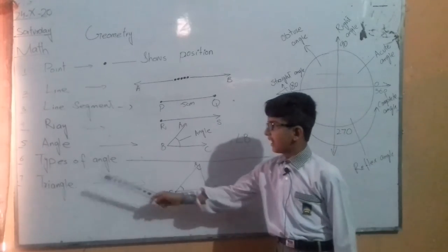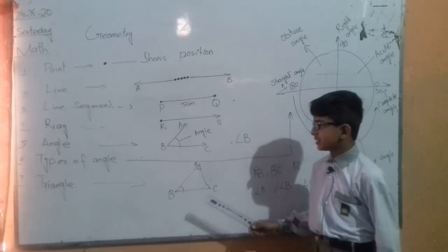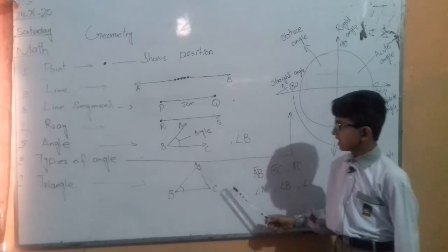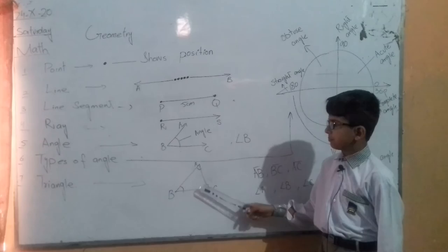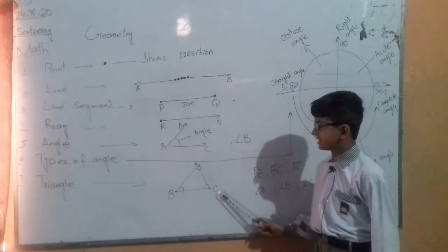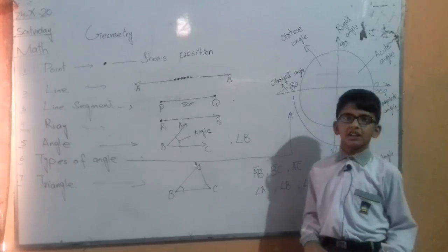Triangle. It is a geometrical shape which has three sides, three vertices is called triangle.